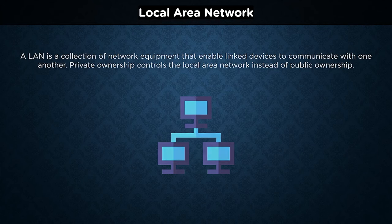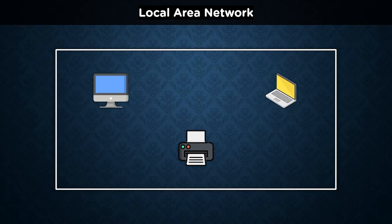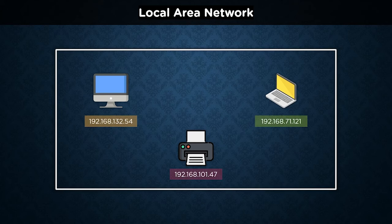To better understand this, let's take a sample structure. We can see the various components of a local network connection in this picture, including three different devices: a system, a laptop, and a printer. To identify these devices inside the network, we need to assign an identifier to each device — this is where an IP address helps. An IP address is a lengthy string allocated to any device connected to a network that utilizes internet protocol as the communication medium.